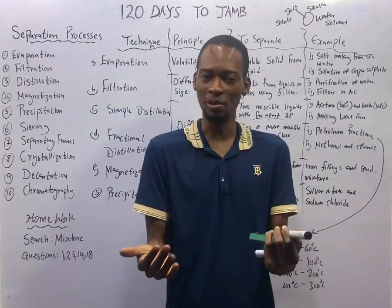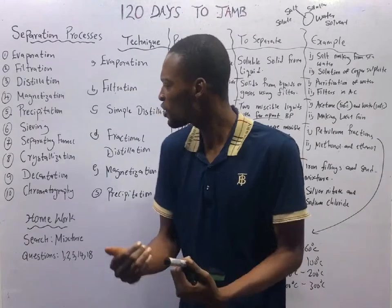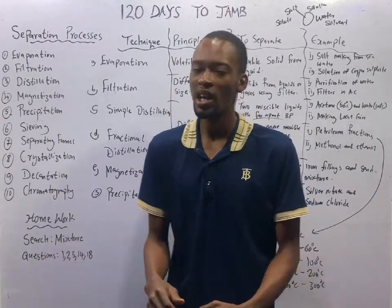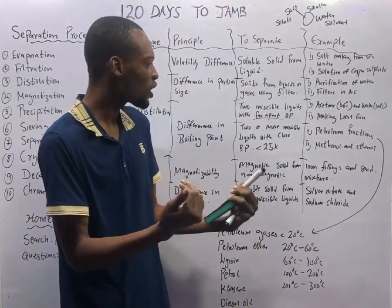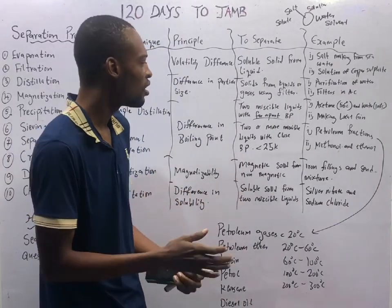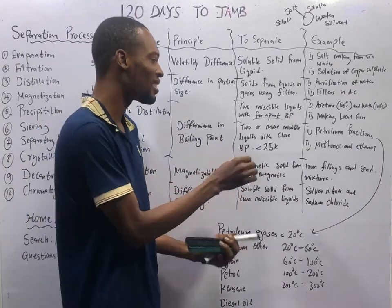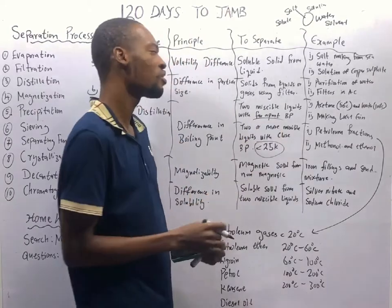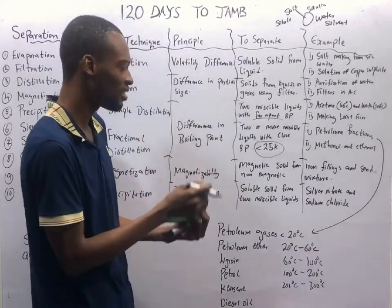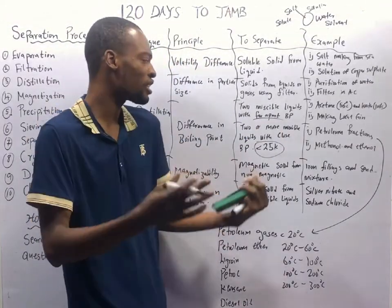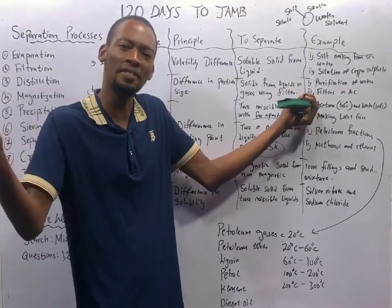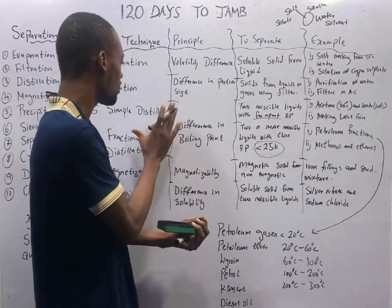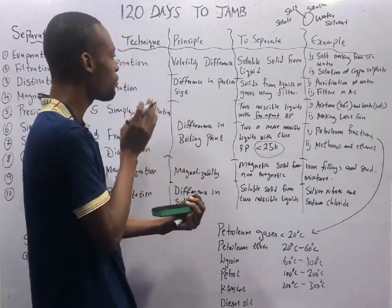Which boiling point is too close and which is too far apart? For two or more miscible liquids with a boiling point difference less than 25 Kelvin, you use fractional distillation. If the difference in boiling point is bigger than 25 Kelvin, it is a wide boiling point difference and you use simple distillation.